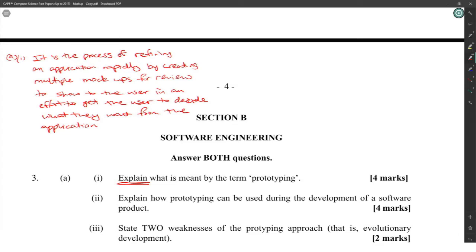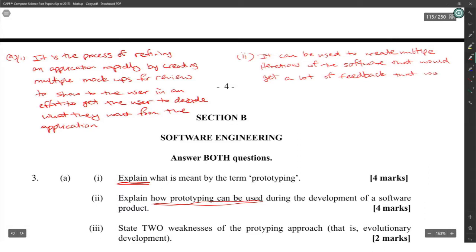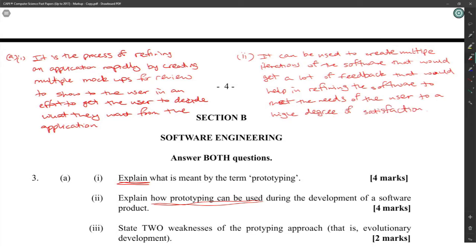Part two: explain how prototyping can be used during the development of a software product. All right, it can be used to create multiple iterations of the software that would get a lot of feedback that would help in refining the software to meet the needs of the user to a high degree of satisfaction. I don't know, these questions literally let you say stuff.